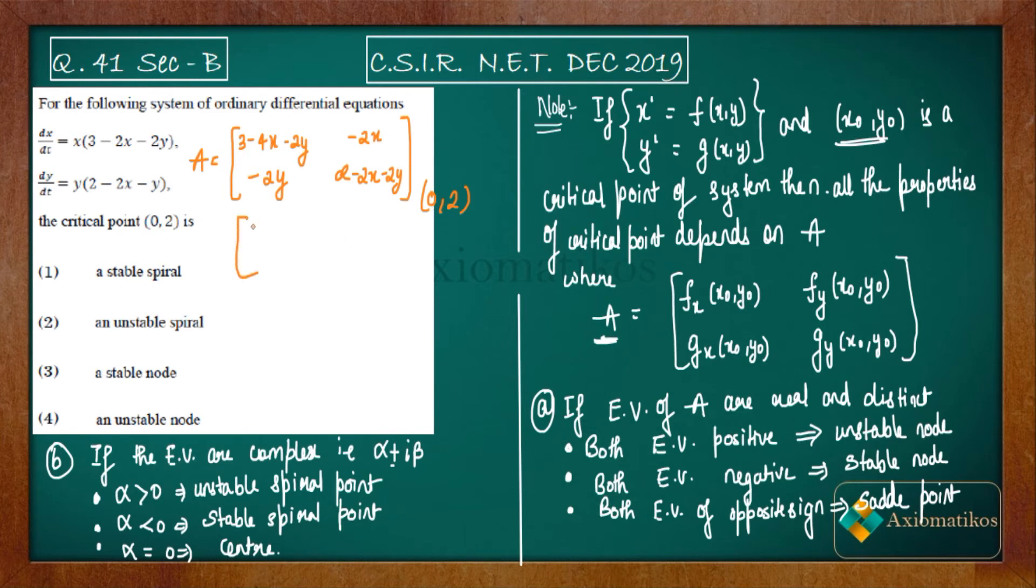...you will get 3 minus 4, that is minus 1, you will get 0 over here. And then you will get minus 4, then you will get 2. So you will get minus 2 over here.